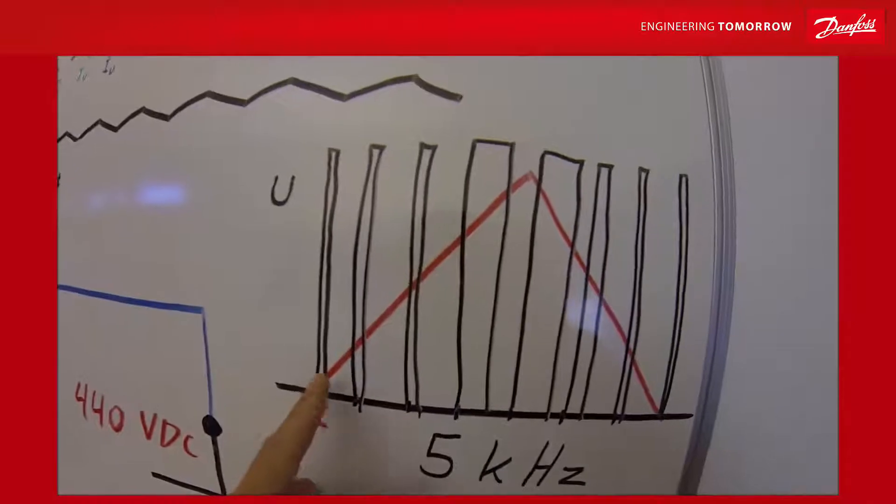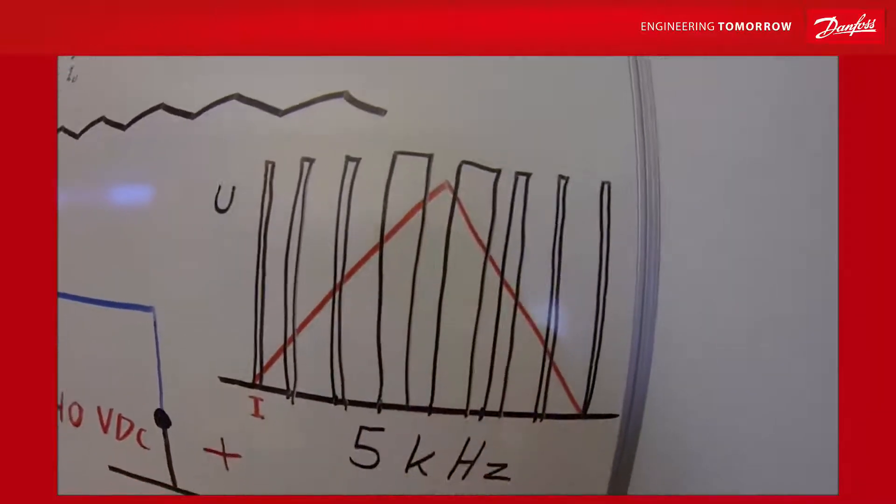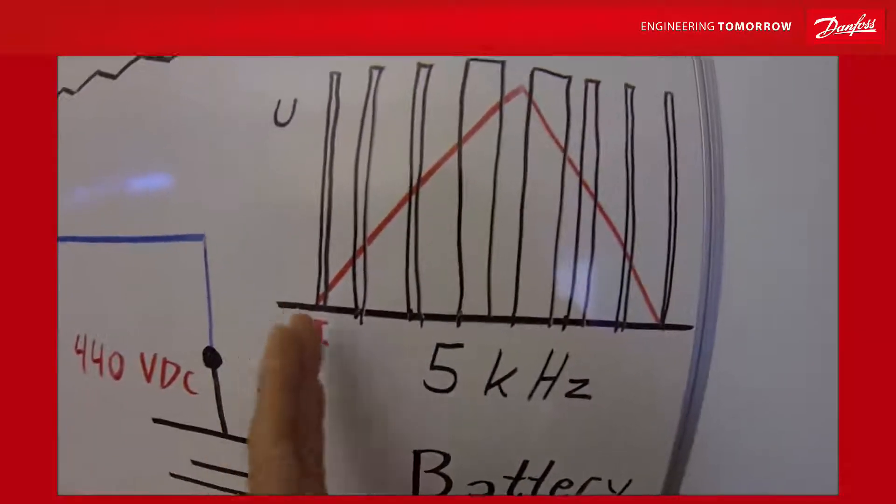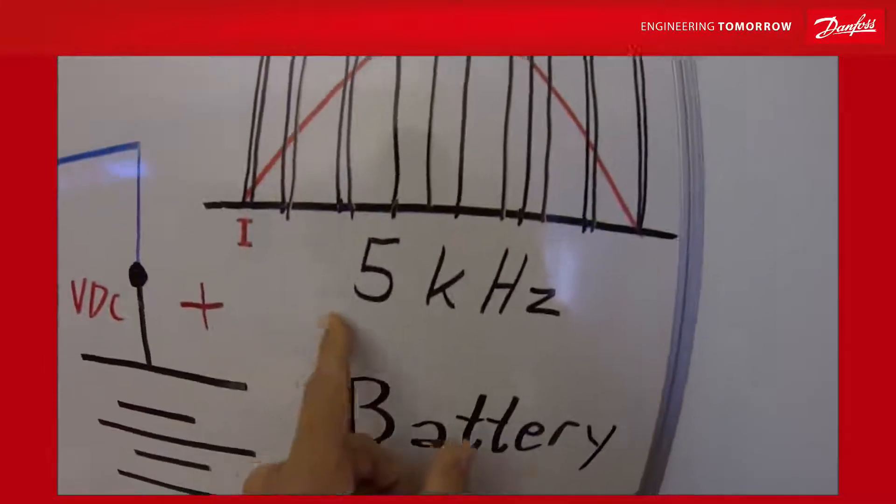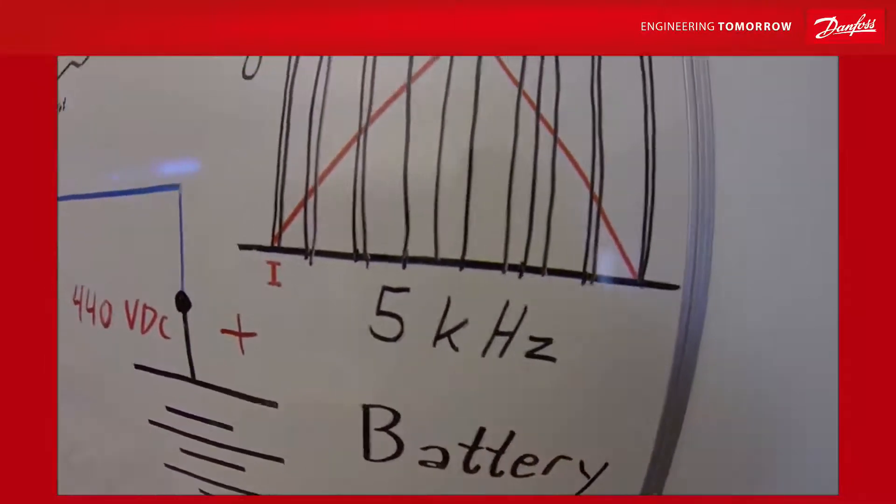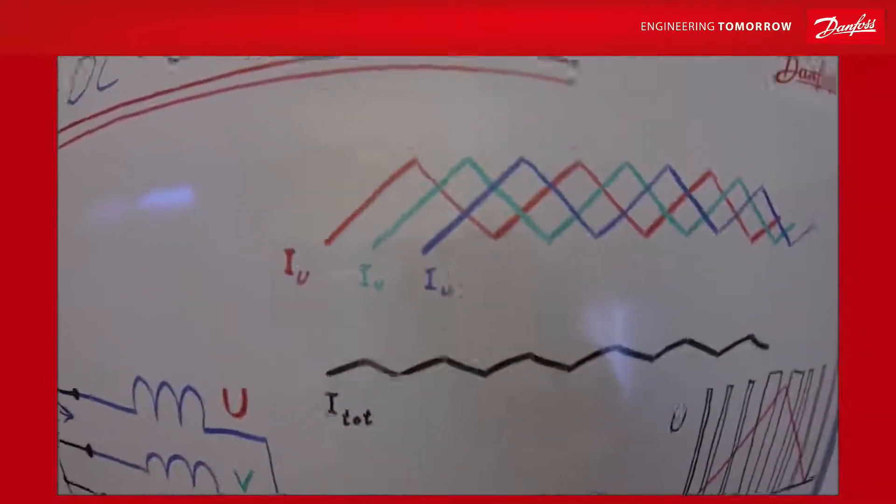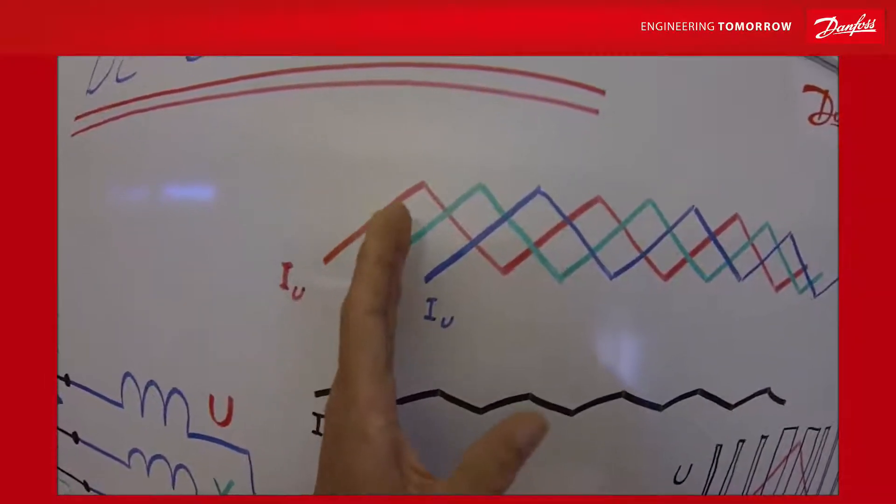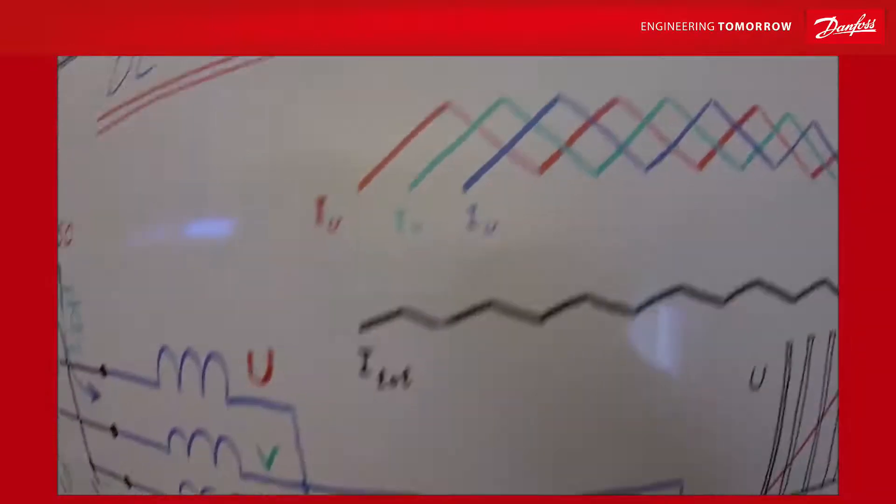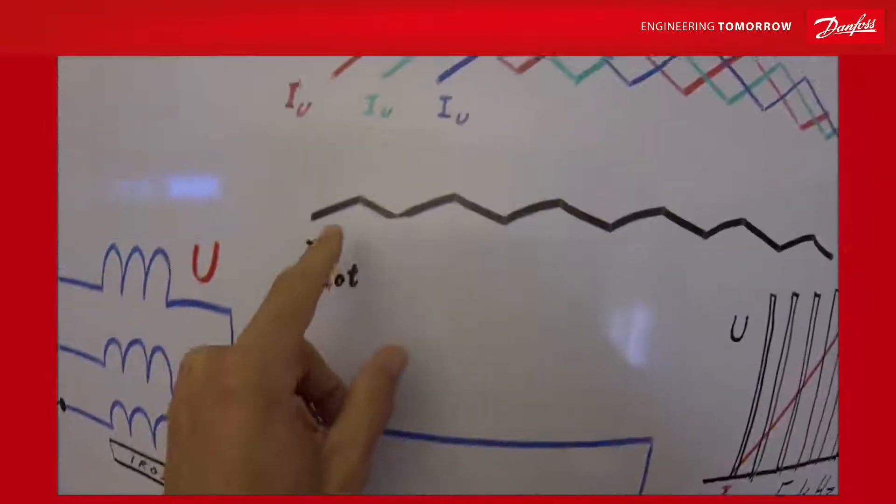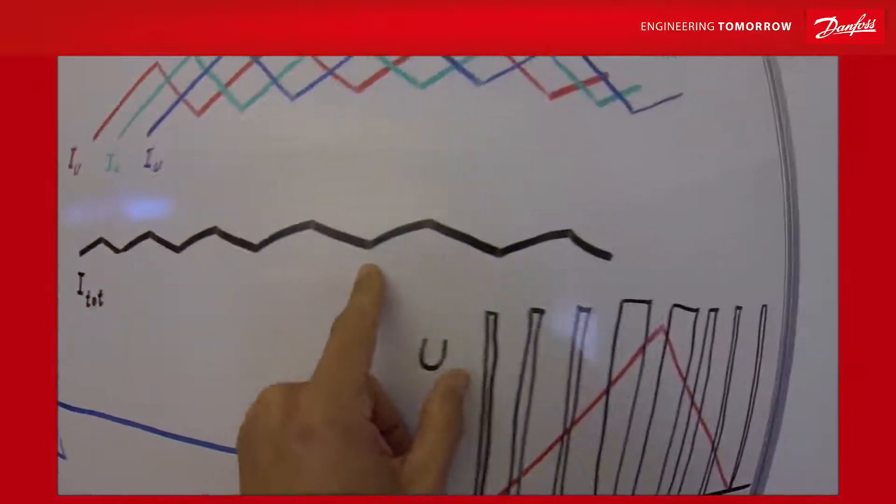The current in each phase has a trapeze-shaped waveform. The pulse width modulation making this trapeze-shaped waveform is about 5 kHz. The three motor phases are separated about 120 degrees and at the summarization point, the current will be the sum of the motor phases.